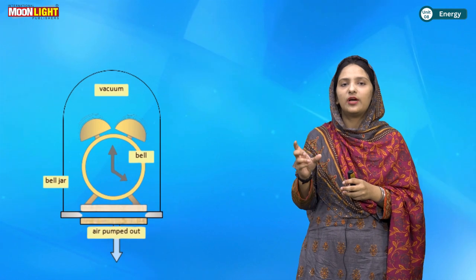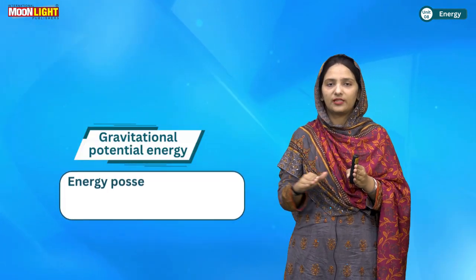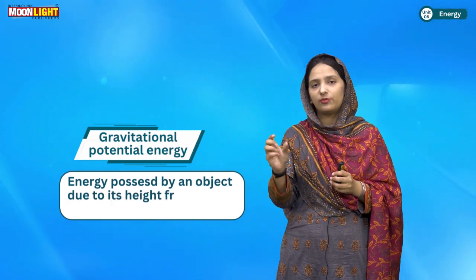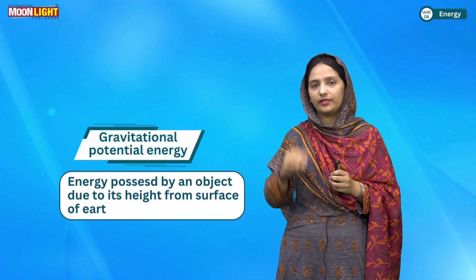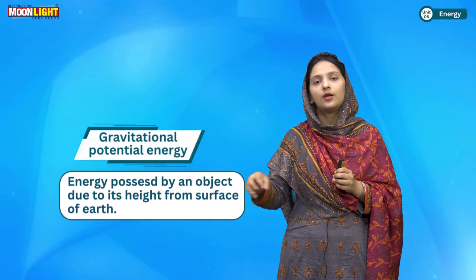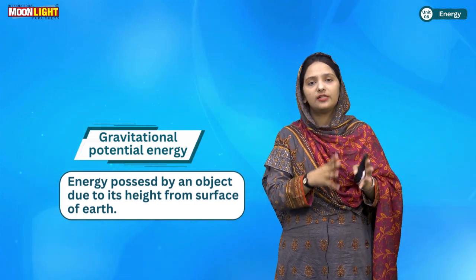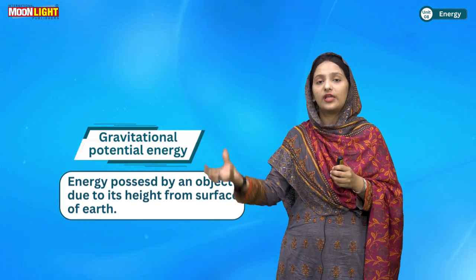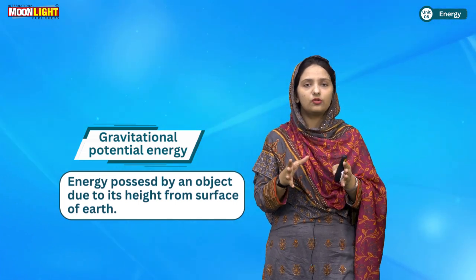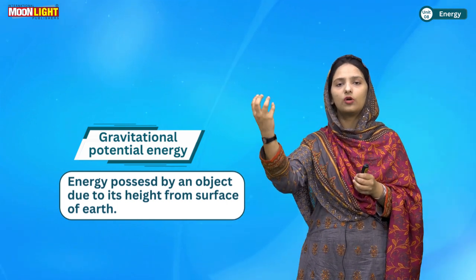The next form of energy is gravitational potential energy. You know the force of gravity. In gravitational potential energy, the height of an object relative to Earth is considered. The energy stored in an object at a specific height due to Earth's gravitational force is called gravitational potential energy.